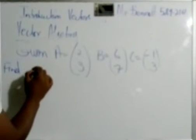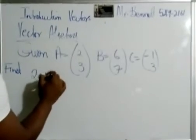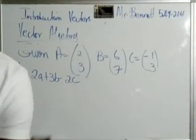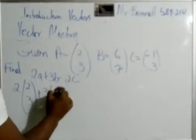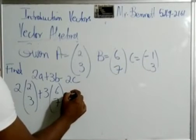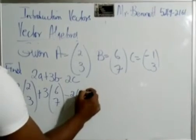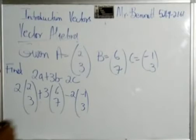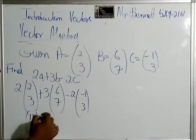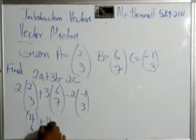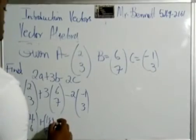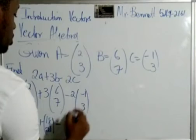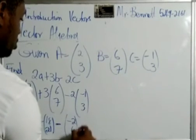So we are asked to find 2a plus 3b minus 2c. As you see this is a scalar factor. So it will be 2 times a, which is (2, 3), plus 3 times b, which is (6, 7), minus 2c, which is (2, -1, 3). So 2 times 2 is 4, 2 times 3 is 6. 3 times 6 is 18, 3 times 7 is 21. We multiply by 2, so 2 times negative 1 is negative 2, 2 times 3 is 6.